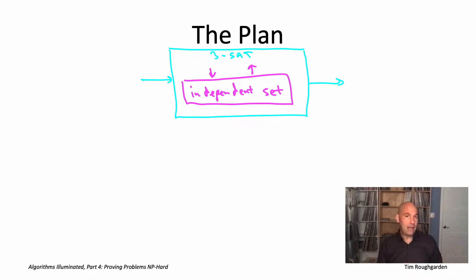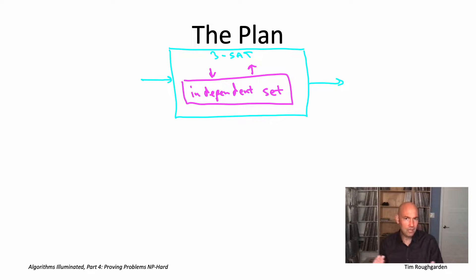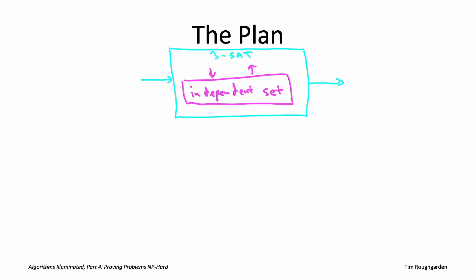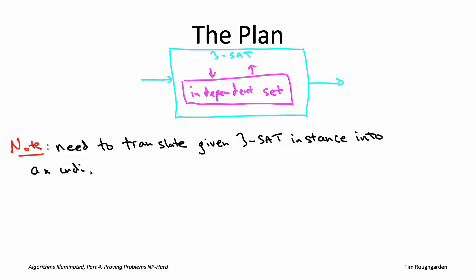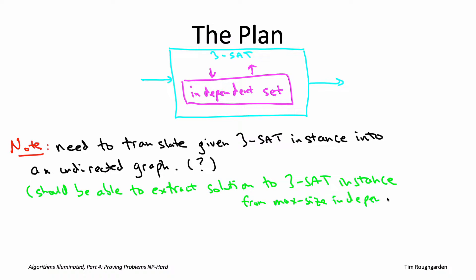Here things are not as straightforward — we are not dealing with two graph problems. We're dealing with one problem from logic, 3SAT, and a graph problem, independent set. The magenta box expects a graph, but we were given a 3SAT instance — just a bunch of disjunctions of literals. Somehow we have to fabricate a graph from the 3SAT instance that we can feed into our subroutine, so that the answer to the independent set problem tells us whether the given 3SAT instance was satisfiable or not.